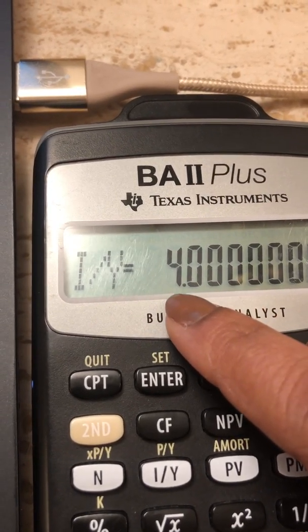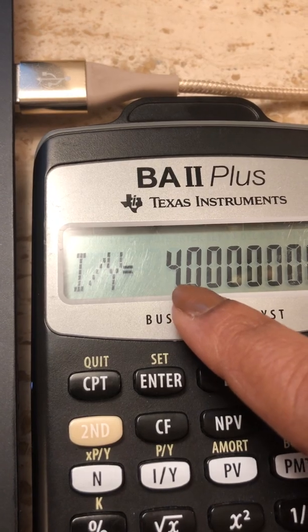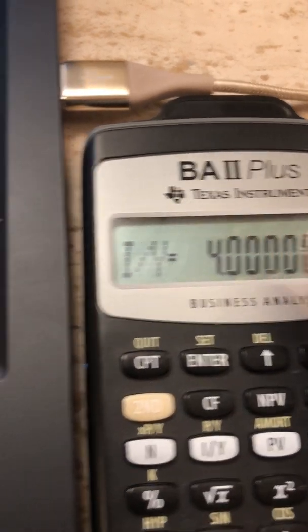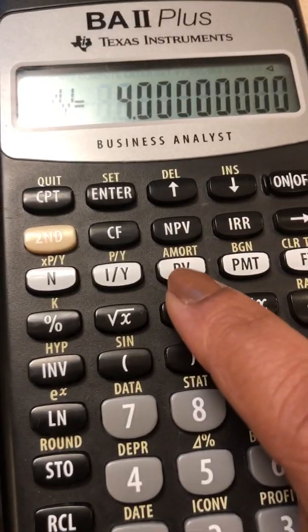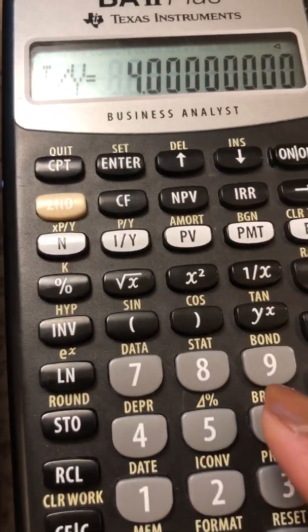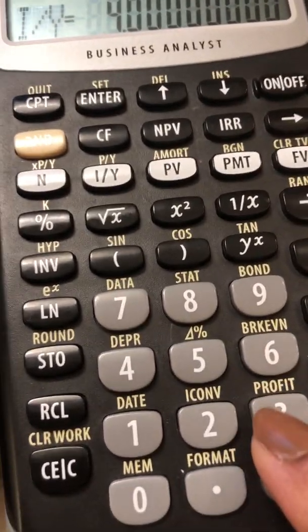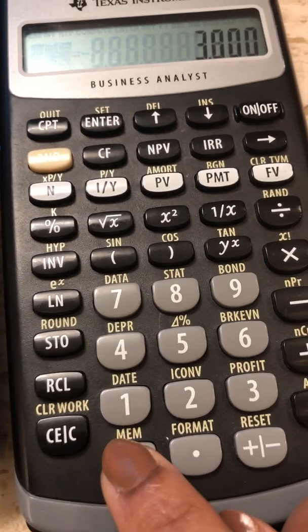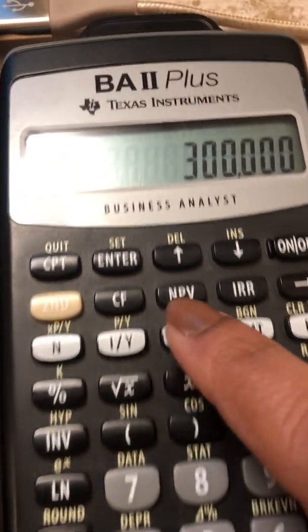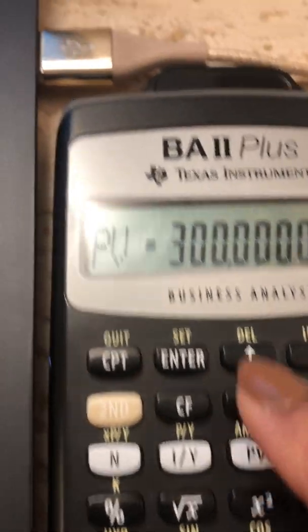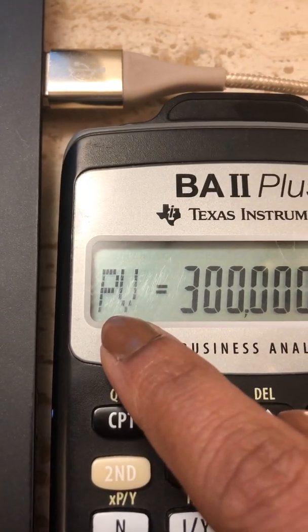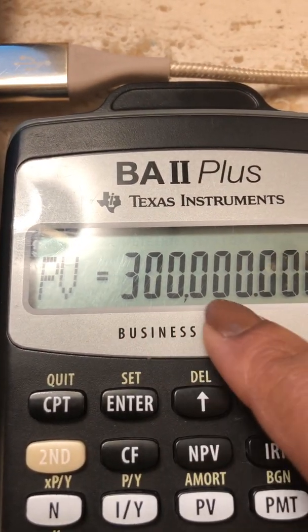Remember, it's just 4, not 4% or 0.04. My PV or the present value is 300,000. So I'm going to put in 300,000 and then hit my PV, essentially setting the PV of 300,000.